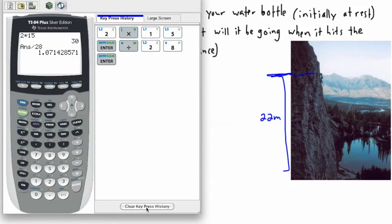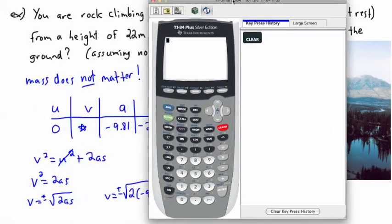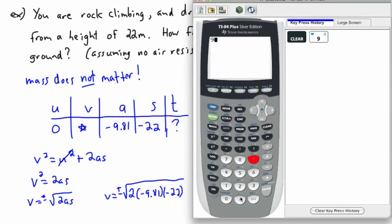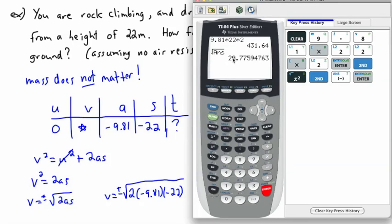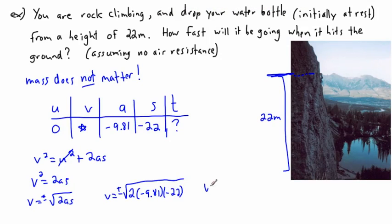Using a calculator: √(9.81 × 22 × 2) gives approximately 20.8, which rounds to about 21 meters per second. So the speed is approximately 21 meters per second. If we want the velocity, it would be negative 21 meters per second, indicating it's moving downward. You might wonder — how fast is that really?